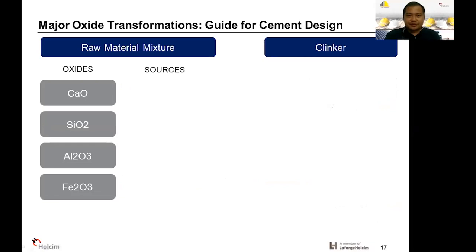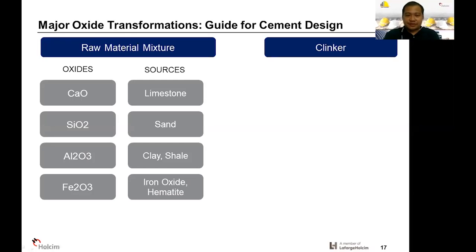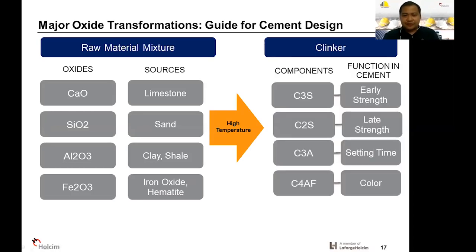Here you can see the oxides and their sources: calcium from limestone, silica from sand, alumina from clay, and iron from iron oxide. When these raw materials are subjected to high temperatures, these oxides transform into four important clinker components: C3S for early strength, C2S for late strength, C3A, and C4AF.